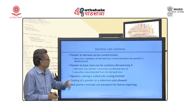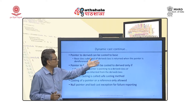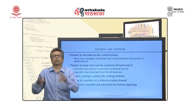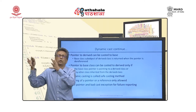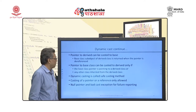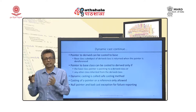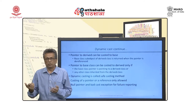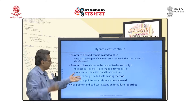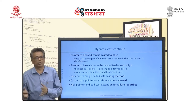A pointer to a derived class can be cast to a base class pointer — that is always allowed because every derived class object contains a base class sub-object. The other way around, a pointer to a base class can be cast to a derived class pointer only if it is actually pointing to a derived class object or further derived object. Dynamic casting using dynamic_cast is safe: if not appropriate, it will not cast and returns an error — a null pointer or a bad_cast exception.